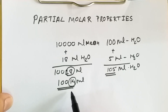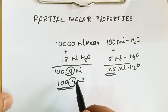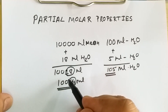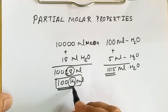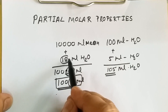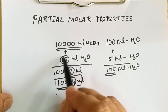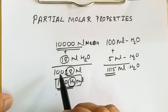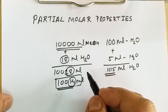This change in volume when we are considering binary mixtures is known as partial molar volume. In short, partial molar properties can be defined as those properties whose quantity changes with the change in the number of moles. Here, as I change the mole fraction, the net volume is changing, and hence I can say that 14 ml is the partial molar volume of water in methanol.